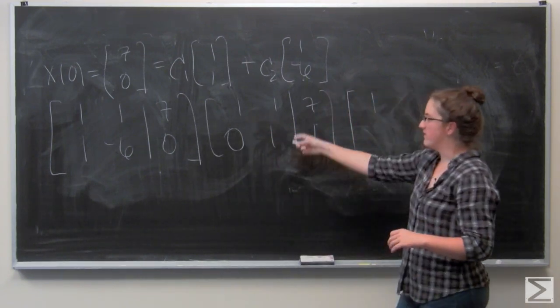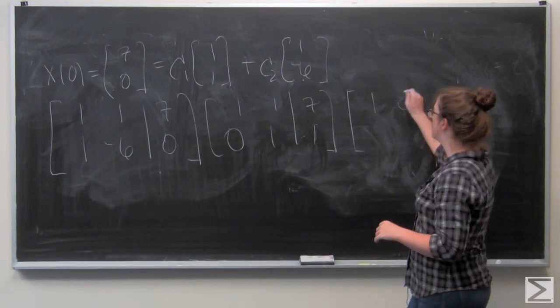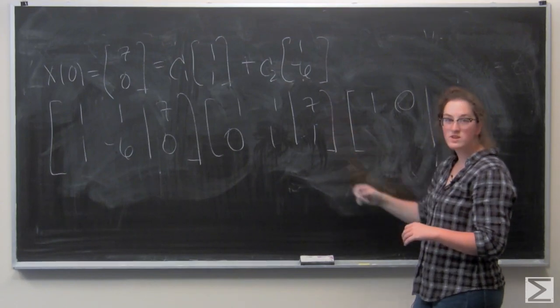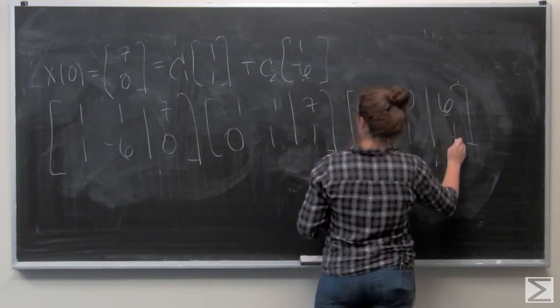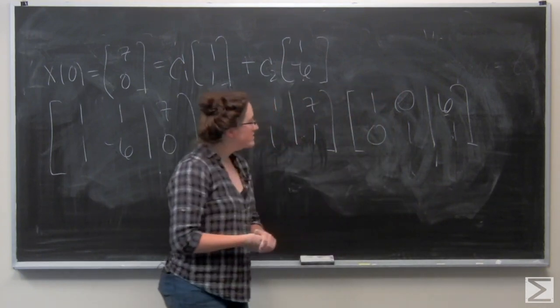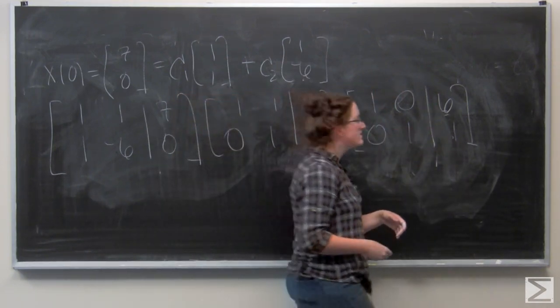So that 1 sticks around, and then I have 1 minus 1 is going to be 0, and 7 minus 1 gives me 6. So I've solved for c1 and c2. They are 6 and 1 respectively.